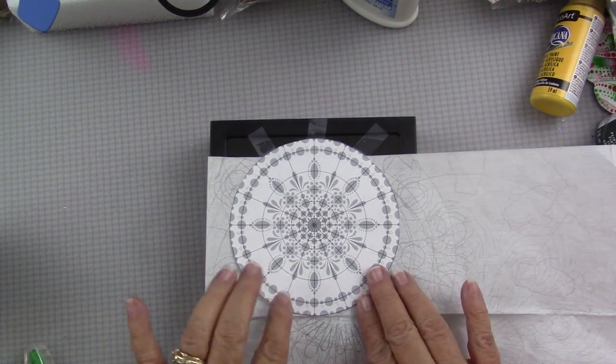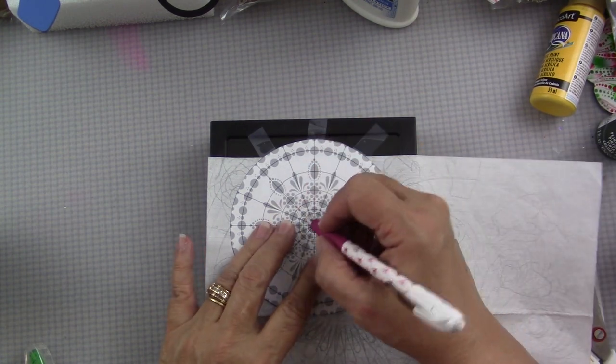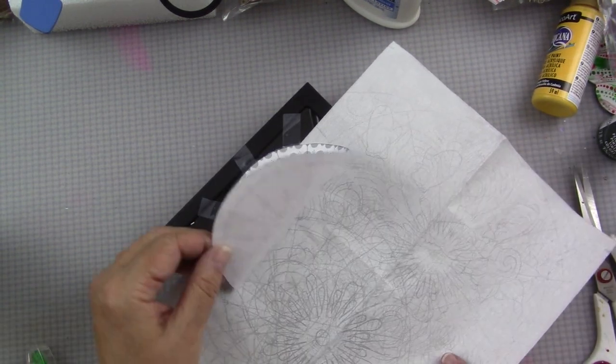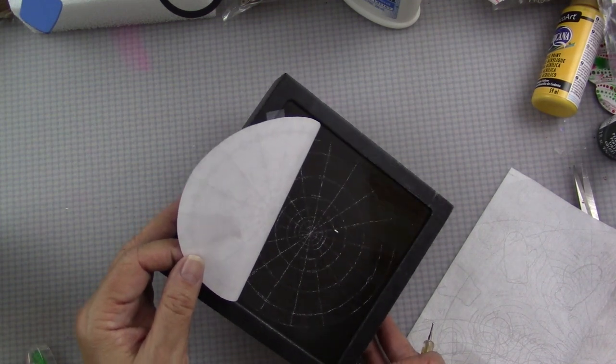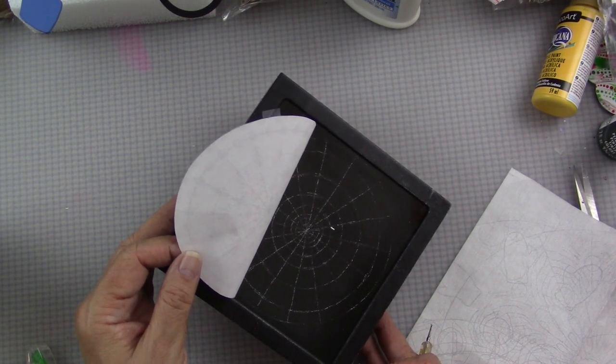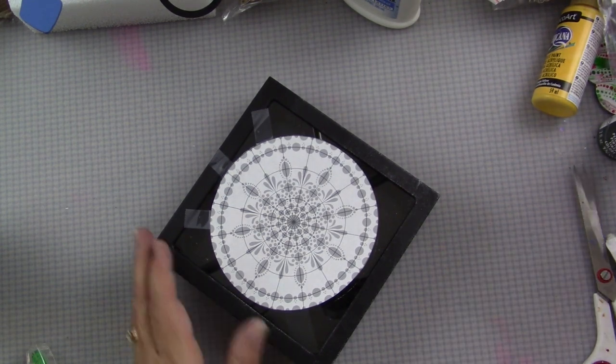Then I will slip my piece of Saral transfer paper under and start to trace on the lines. Now I'm just doing the primary grid. I'm not tracing every little circle because I've got the pattern that I can refer to. Before I pull that tape up I just check it to make sure that I've got the grid down correctly.